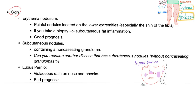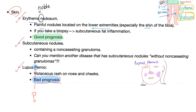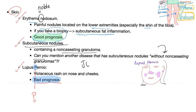Skin involvement is a big deal. You can have erythema nodosum, subcutaneous nodules, or lupus pernio. Erythema nodosum has an N — it's a noble lesion with a good prognosis. It presents as painful nodules in the lower extremities, especially over the shin of the tibia. You see it in sarcoidosis and inflammatory bowel disease, among others. It's more common in females. Biopsy shows subcutaneous fat inflammation. Subcutaneous nodules contain non-caseating granuloma. Another disease with subcutaneous nodules but without non-caseating granuloma is rheumatic fever — the N in the Jones criteria.